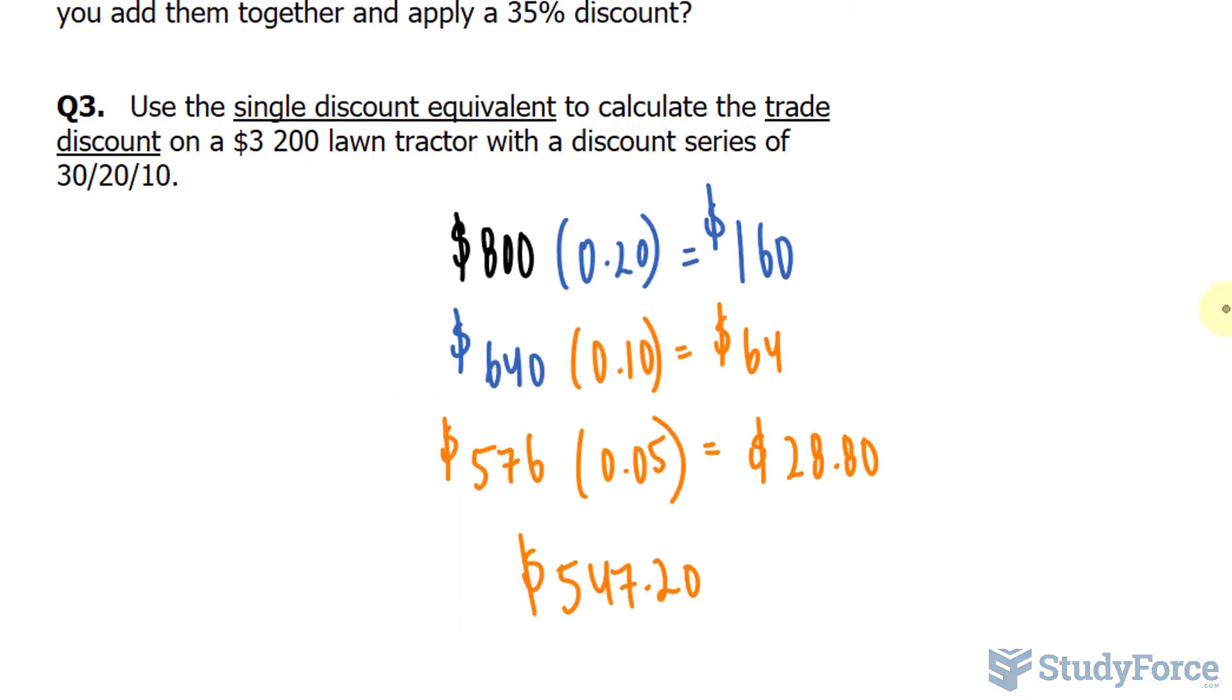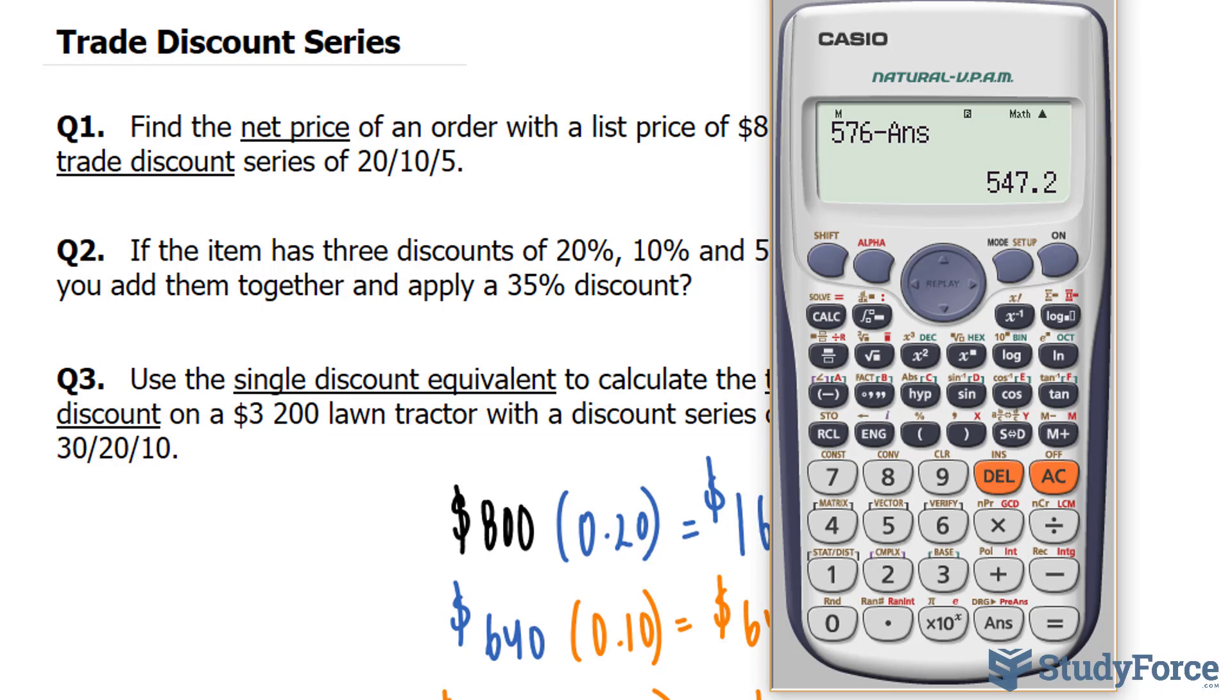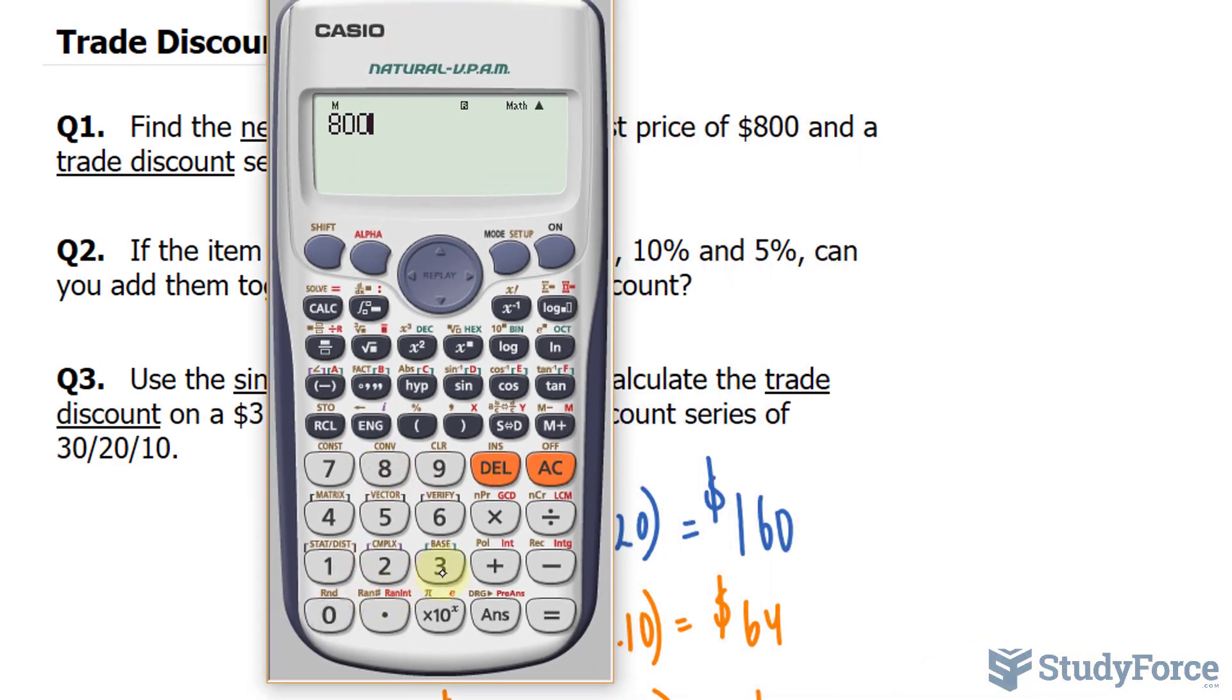The previous answer gave us $547.20. Let's apply a 35% discount to 800. So I'll take my base price of 800 and multiply it by 0.35. That's a discount of 280. So let's subtract that number from 800 and we get 520.